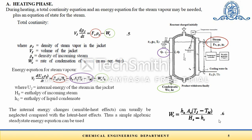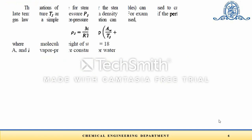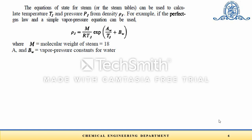One more equation is required for the heating phase: the equation of state for the steam. This gives calculation of temperature T_j and pressure P_j from density rho_j. Using the perfect gas law and a simple vapor pressure equation, we have: rho_j = P·M / (R·T_j), where P is given in exponential form as exp(A_w / T_j + B_w), M is the molecular weight of steam (18), and A_w and B_w are vapor pressure constants for water.